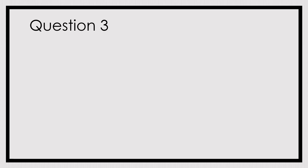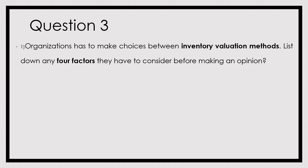Let's see question number three, which is on inventory. The first question is focusing on the theory part. An organization has to make a choice between inventory valuation methods, and we have to list down any four factors they have to consider before making an option. There are three main inventory valuation methods: FIFO, LIFO, and weighted average method.